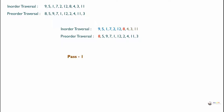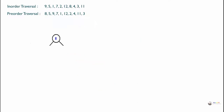So in the first pass, the root is 8, the left subtree is 9, 5, 1, 7, 2, 12, and the right subtree is 4, 3, 11. We can construct the binary tree with 8 as the root, 9, 5, 1, 7, 2, 12 as the left subtree, and 4, 3, 11 as the right subtree.